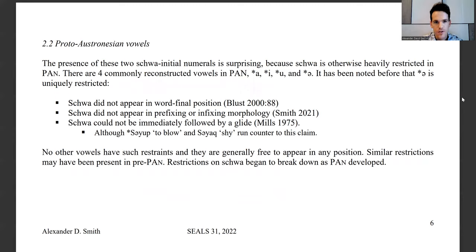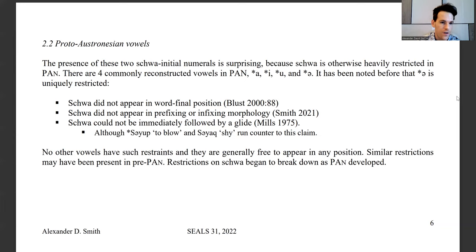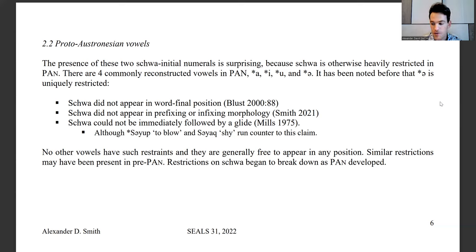Regarding the vowels themselves, the fact that there are only two schwa-initial numerals is surprising, because schwa is otherwise heavily restricted in Proto-Austronesian. There are four commonly reconstructed vowels — A, I, U, and schwa — and several restrictions on schwa have been noted: schwa did not appear in word-final position, did not appear in prefixing or infixing morphology, and it's been claimed schwa cannot be immediately followed by a glide. No other vowels have any similar restraints — they're free to appear in any position. These restrictions began to break down as Proto-Austronesian developed, and numerous daughter languages today have schwa in initial, final, and affixal positions, but when it comes to Proto-Austronesian as a reconstructed language, none of that existed.